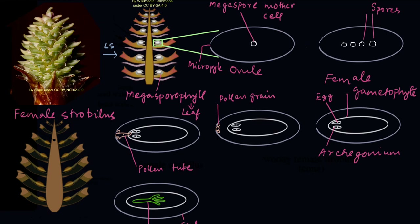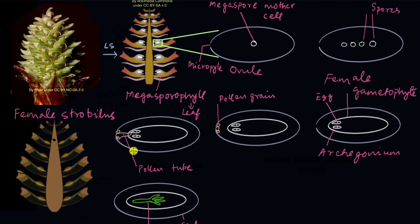To summarize reproduction in gymnosperms: inside the ovule, a megaspore mother cell divides by meiosis to form four spores, only one of which survives. That spore grows into the female gametophyte, which has archegonia containing eggs. When pollination happens, the pollen grain enters through the micropyle, germinates to form a pollen tube, and one male gamete is discharged into the egg in an archegonium. This forms the zygote, which develops into the embryo.